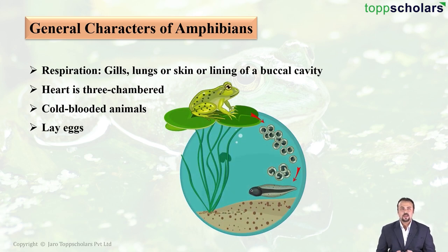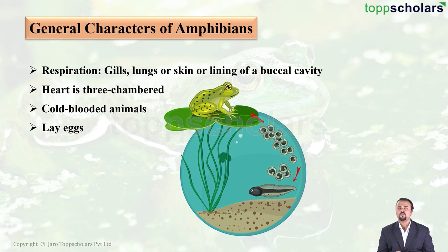Most amphibians — with very few exceptions — are oviparous, meaning that they lay eggs, as you can see with the frog shown here.